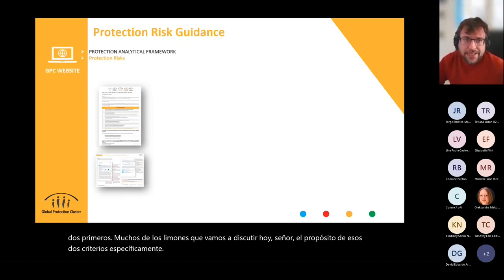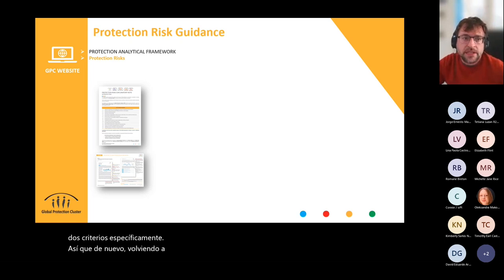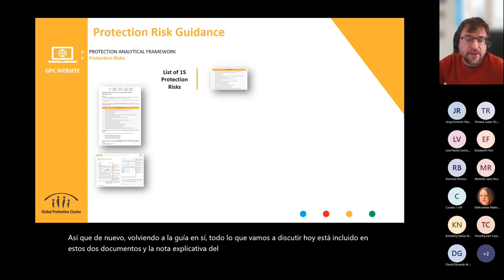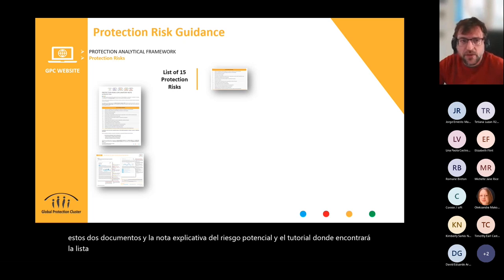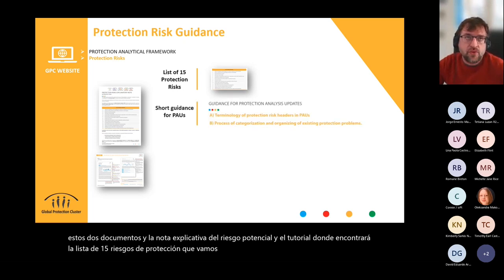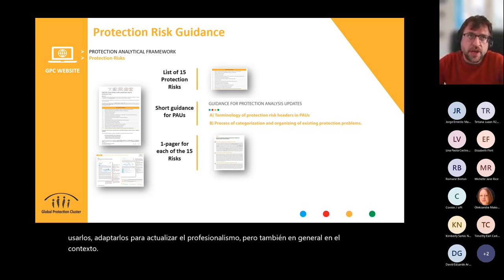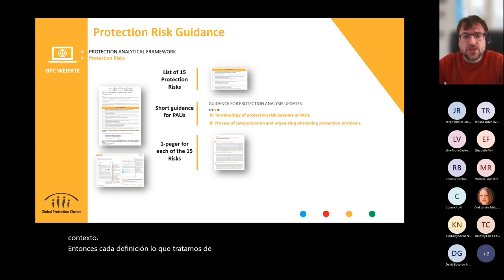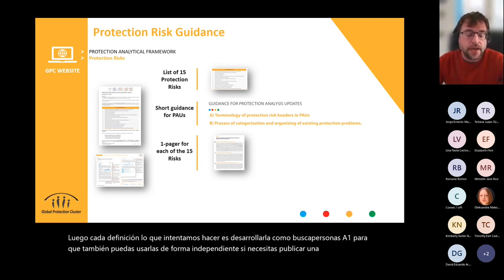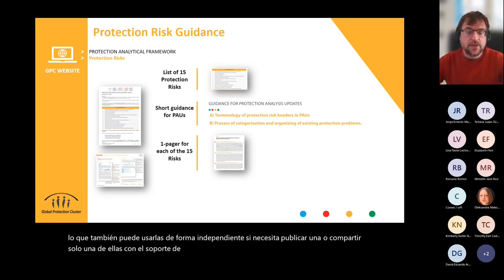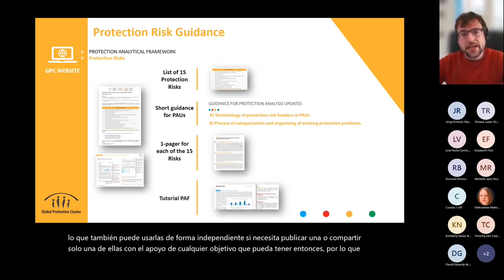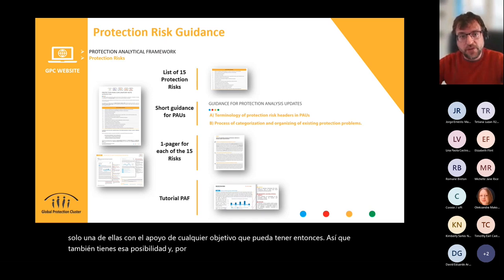Everything we're going to discuss today is included in these two documents: the protection risk explanatory note and the tutorial, where you'll find the list of 15 protection risks, a bit of guidance on how to use and adapt them for the protection analysis update but also generally for the context. Each definition has been developed as a one-pager so you can use them independently if you need to publish or share just one of them for support of any goal you might have. There is also the tutorial on the protection analytical framework, which we are going to see together today.